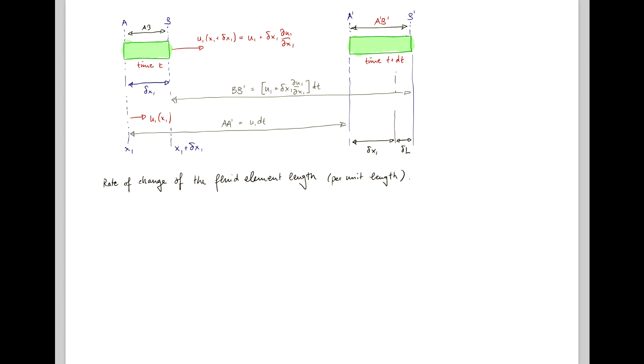Now recall the definition of a derivative. A derivative df/dt is in the limit of dt going to 0, the value of f at some time t plus dt minus f at t divided by dt.